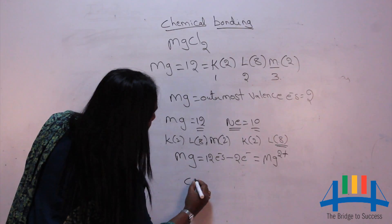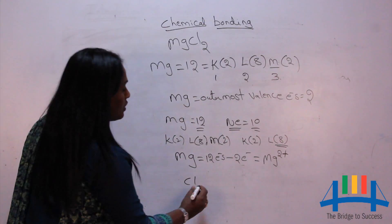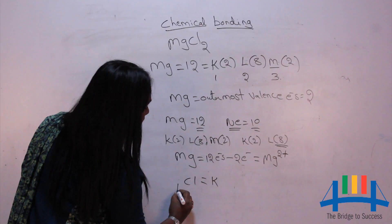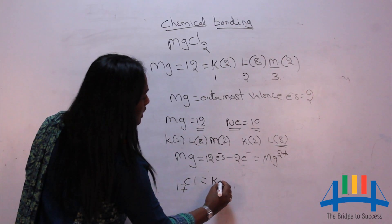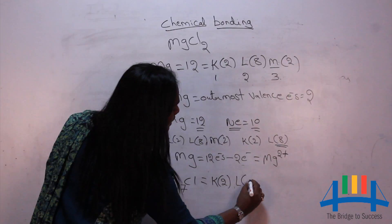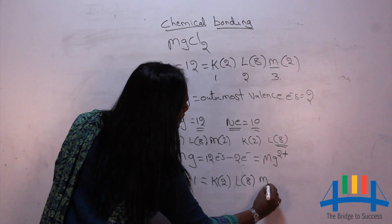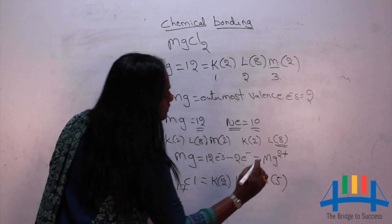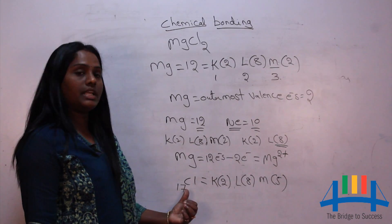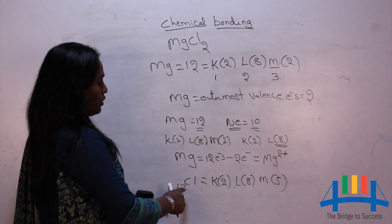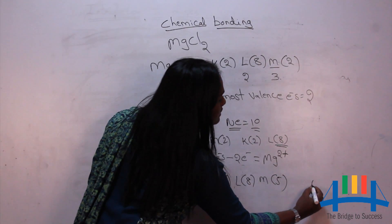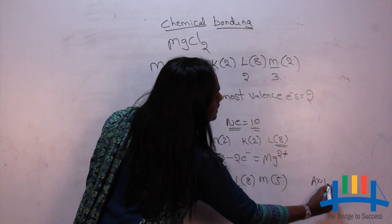Now take chlorine — its atomic number is 17 and configuration is K2, L8, M7. Find its nearest noble gas: chlorine is 17 and argon is 18, so argon is the nearest noble gas.